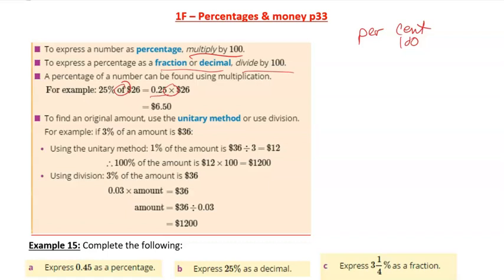To find the original amount, there's a couple things you can do. You can use the unitary method or you can use division. So the unitary method of, say, finding 3% of an amount is 36. So we know that 36 is equal to 3%, so what's 1% then? Divide 36 by 3, this number gives us 1%. Obviously, 1% times 100 is net, so there's our original amount.